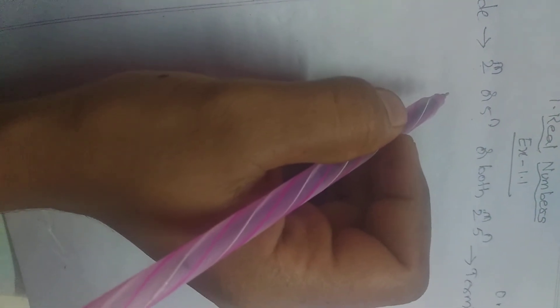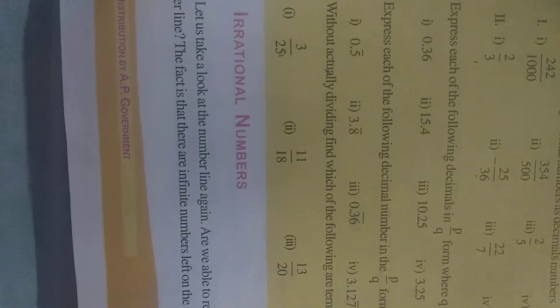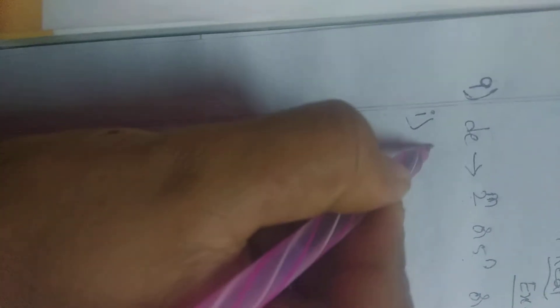If the denominator contains any other prime factor, it is non-terminating. Now the first problem: 3 by 25. Let's check the denominator.